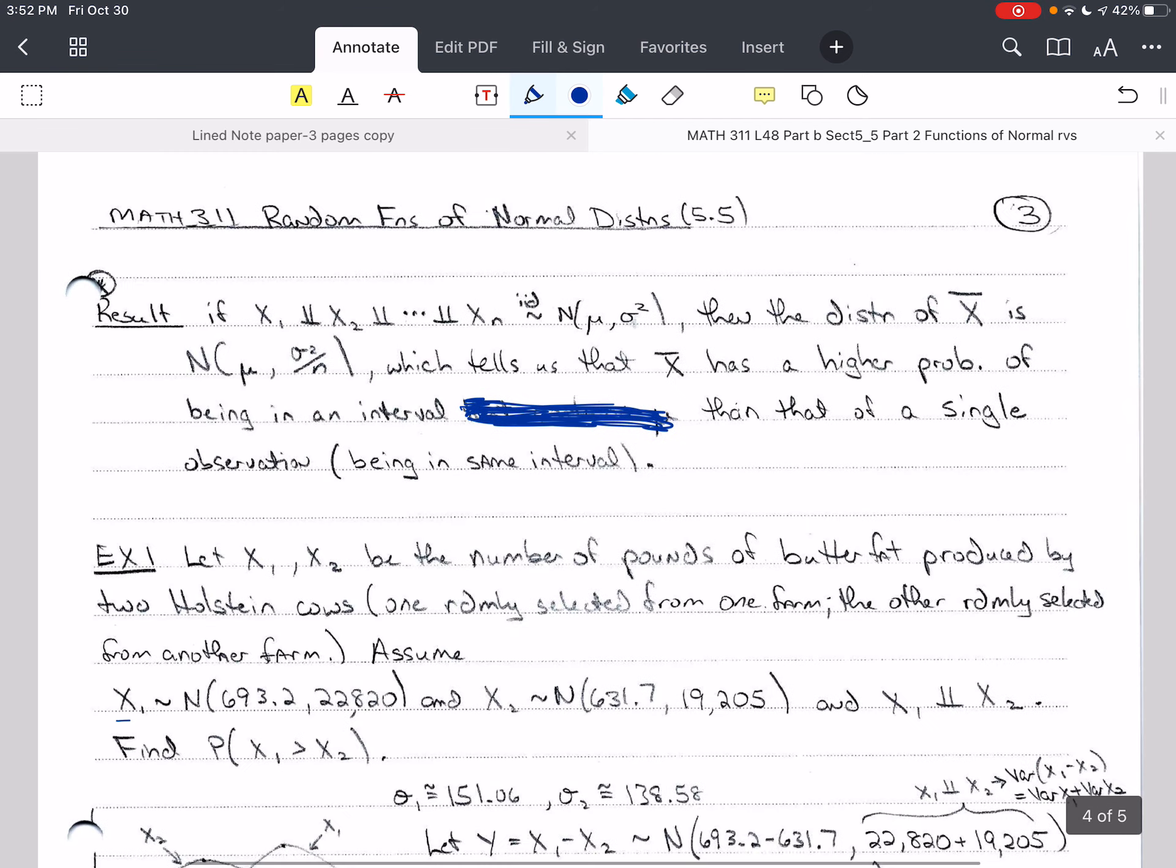So the result from last time is that if x₁, x₂, up to xₙ are iid, normally distributed with μ and σ² as their mean and variance, respectively.